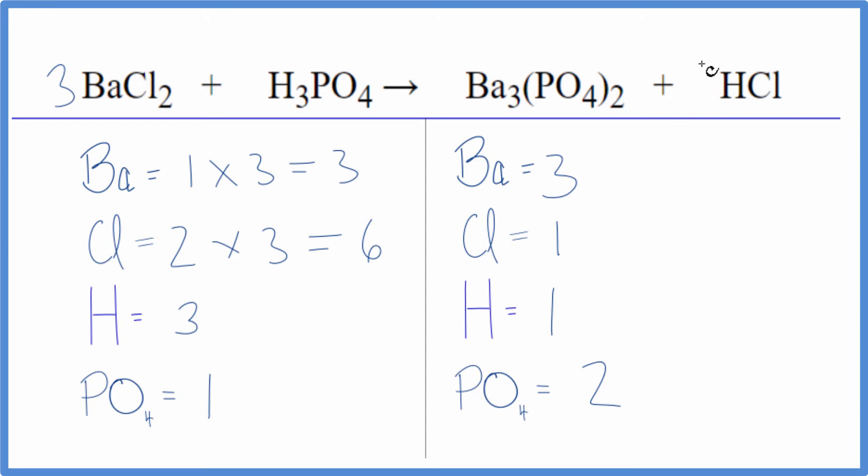So we put a 6 in front of HCl. One times six gives us six chlorines. One times six gives us six hydrogen atoms.